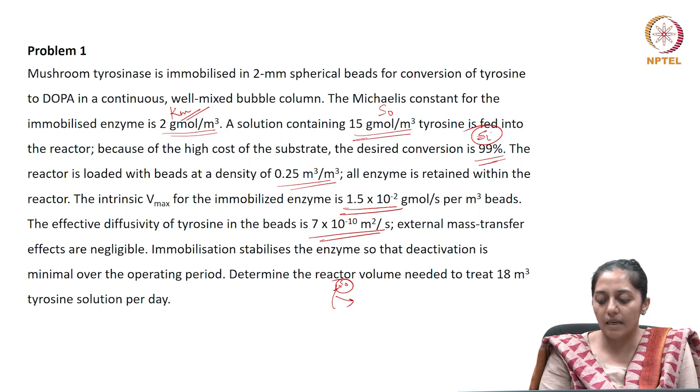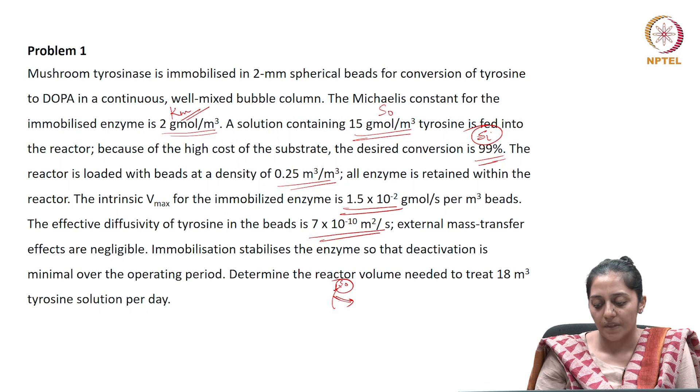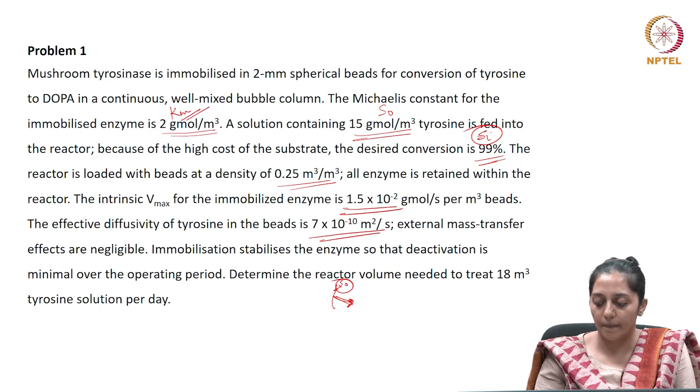Immobilization stabilizes the enzyme so deactivation is minimal over the operating period. Determine the reactor volume needed to treat 18 m³ of tyrosine solution per day, which is the volumetric flow rate.